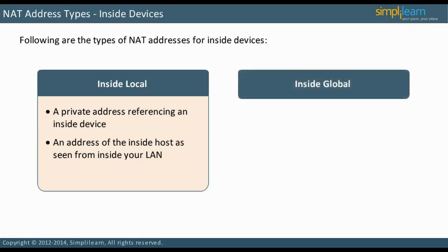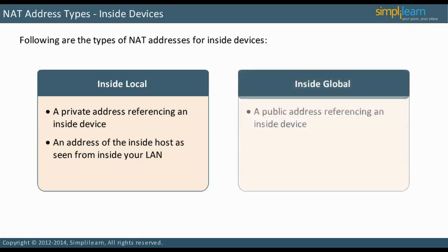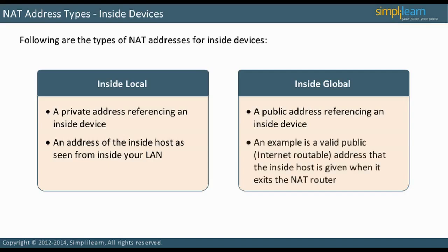An inside global address is a public address referencing an inside device. It is the address of the inside host as seen from the Internet — for example, this could be a valid public internet-routable address that the inside host is given when it exits the NAT router.